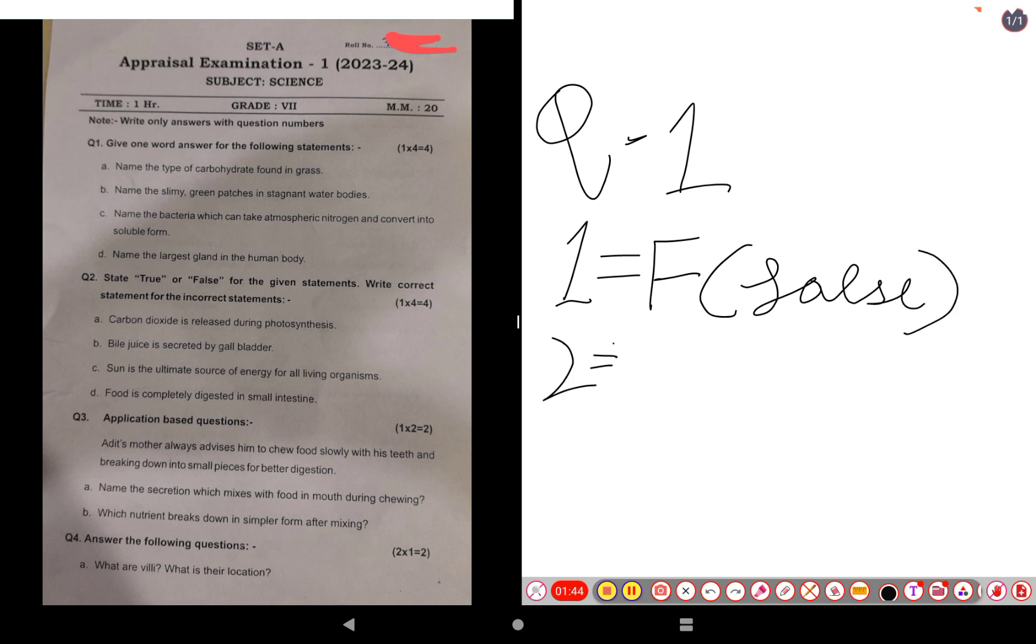The second one: bile juice is secreted by gall bladder. The answer for this one is true. The third one: sun is the ultimate source of energy for all living organisms. This is also true.